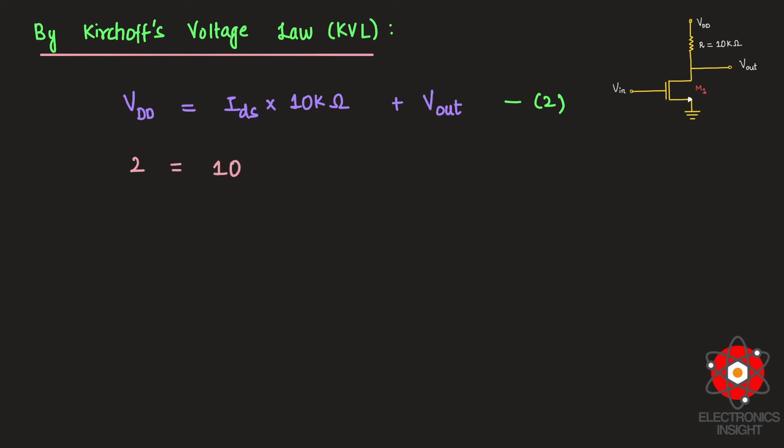And IDS we know that it is 10⁻⁴ × Vout² × 10 × 10³ for 10 kΩ plus Vout. So let us write this in bracket. So this we have now.